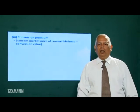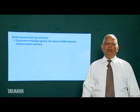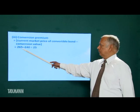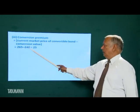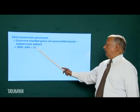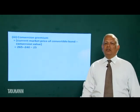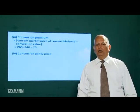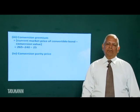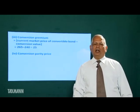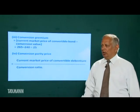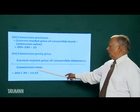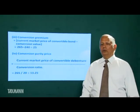Conversion premium = current market price of convertible bond (Rs. 265) minus conversion value (Rs. 240) = Rs. 25. We are paying Rs. 25 extra, which is the conversion premium. Conversion parity price = current market price (Rs. 265) divided by conversion ratio (20) = Rs. 13.25.